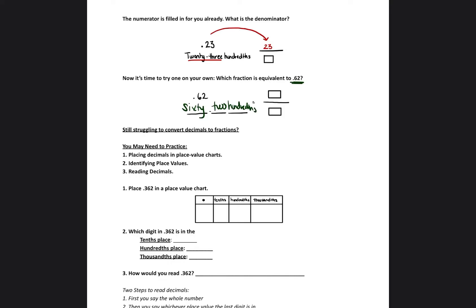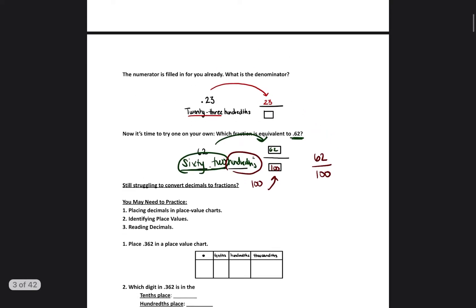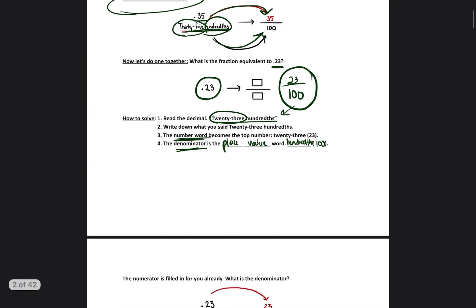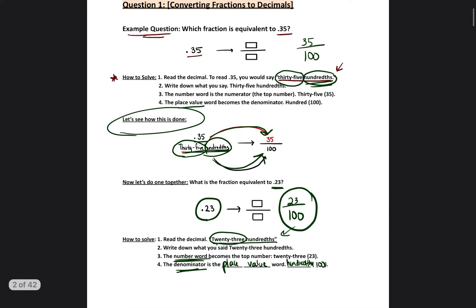So again, the number word is the numerator. So 62 is the numerator. And hundredths, 100, would be the denominator. So this fraction would be 62 over 100 before it's reduced. So I wrote this as the steps that you need to take. If it's easy for you to read a decimal, then it should be easy for you to put it into a fraction.